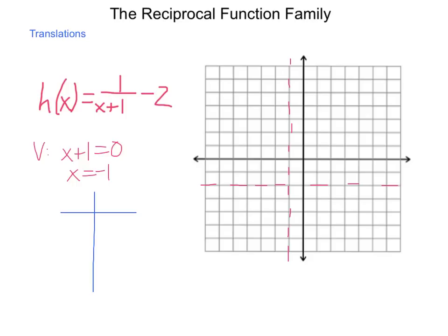x cannot be negative 1, but we'll use 0 and 1. Substituting in 0: 1 divided by 0 plus 1 is 1, minus 2 is negative 1. So at 0 we get negative 1. Substituting in 1: 1 divided by 2 is one-half, minus 2 is negative one-and-a-half. Substituting in 3: 1 divided by 4 is one-quarter, minus 2 is negative 1 and three-quarters. So we end up approximately at those plotted points.